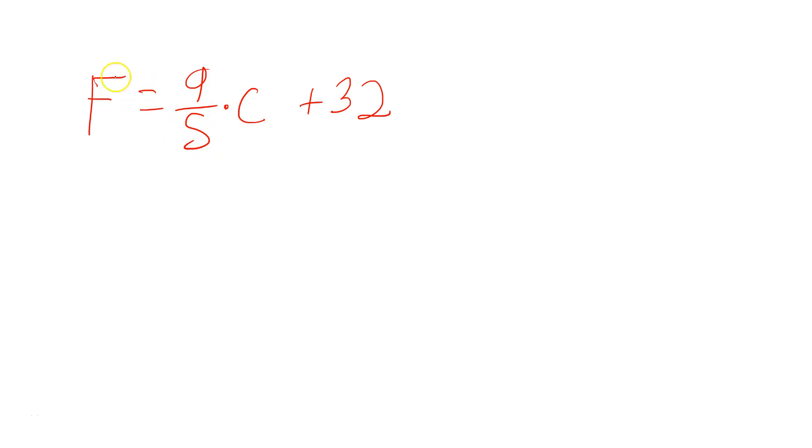In this one, let's take a look at solving a formula for a given variable. We're going to take F equals 9 fifths times C plus 32, and we're going to solve for C. That's our objective.